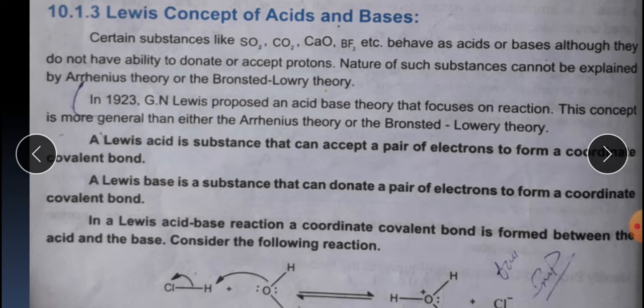So in 1923, G.N. Lewis proposed an acid-base theory that focuses on electron pairs. This concept is more general than either the Arrhenius theory or the Brønsted-Lowry theory. A Lewis acid is a substance that accepts a pair of electrons to form a coordinate covalent bond, and a Lewis base is a substance that can donate a pair of electrons to form a coordinate covalent bond.